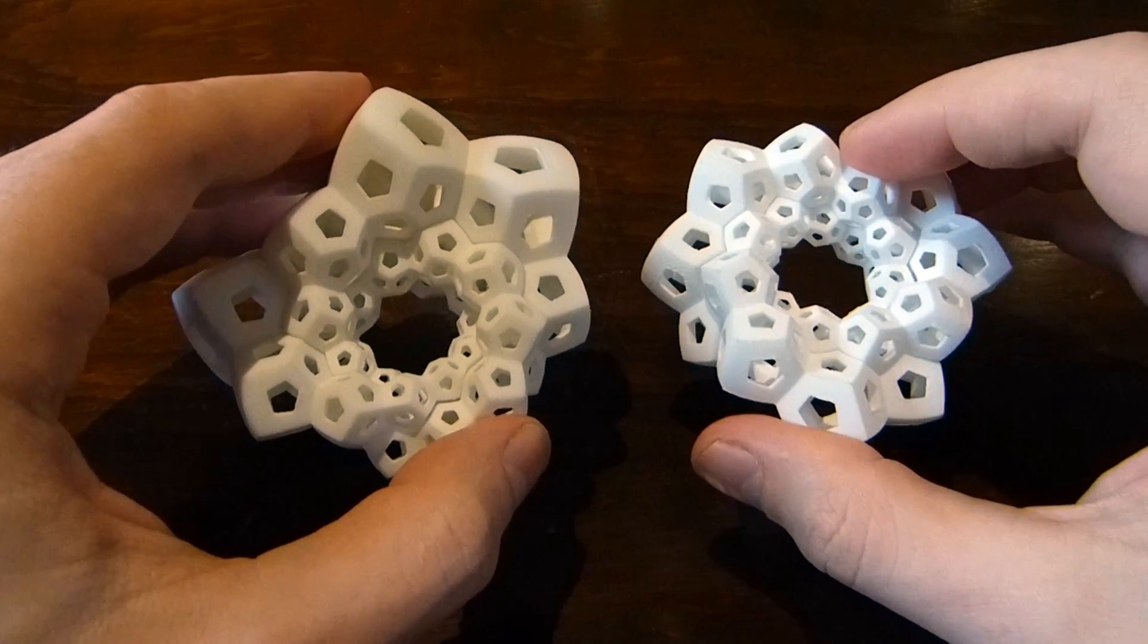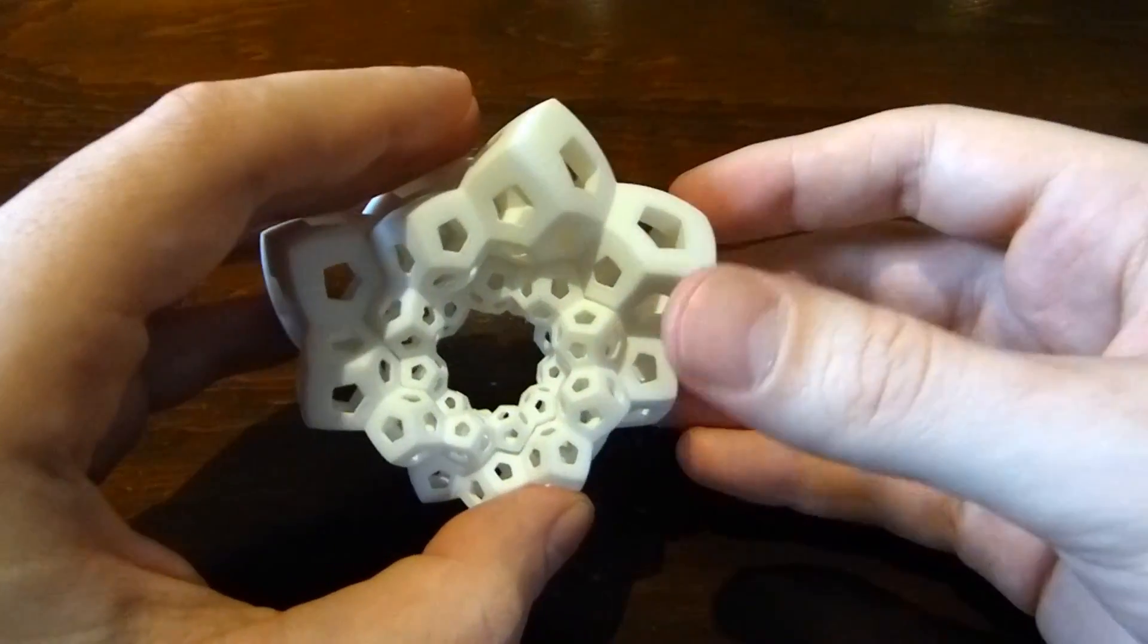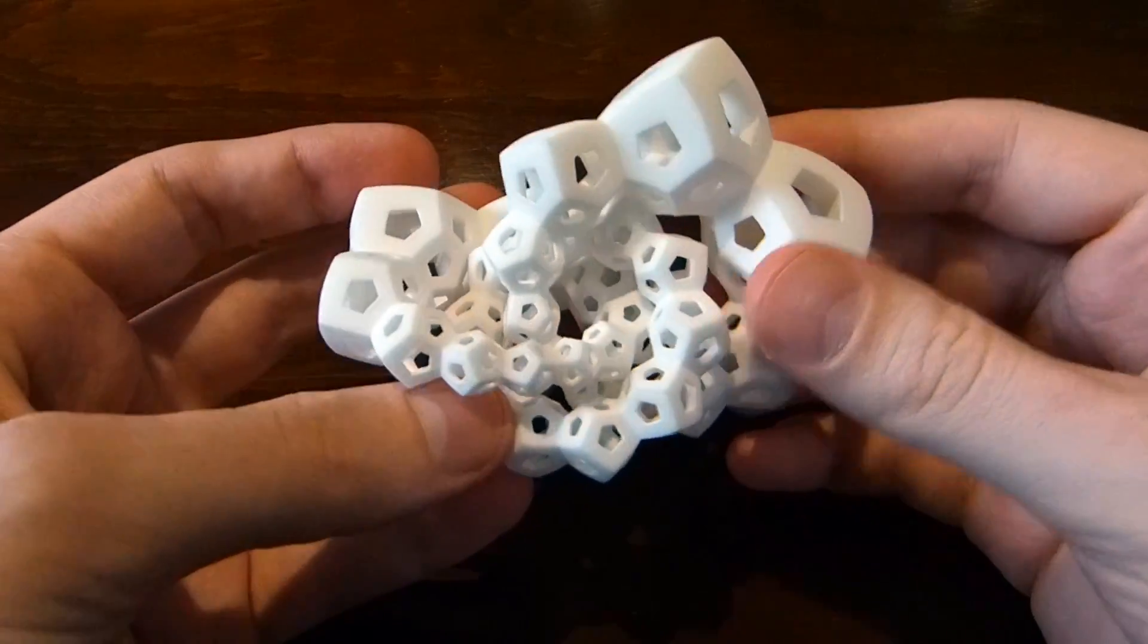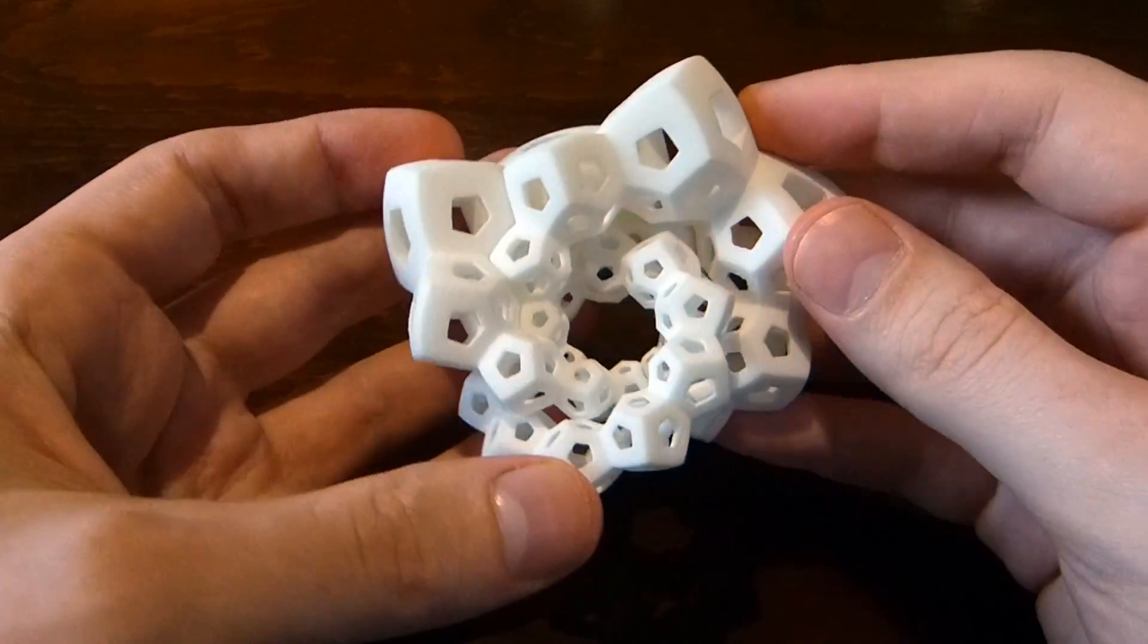So this is two variations on the same idea. Let me talk about dodecahedron chains 1 first. This is actually three separate chains of 10 dodecahedra each, and they fit together like this.